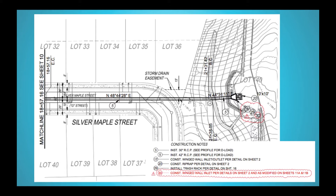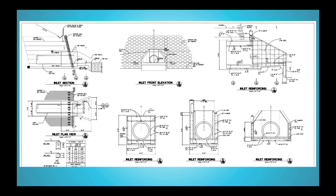Here is a snippet from one of our plans. You can see that number five is a 42-inch RCP and you can see the storm drain running right to the center of the street. This is where the tract kind of slopes down considerably, and the storm drain punches through that wall. Here is the outlet structure, which is number 17. In the construction notes it says construct winged wall inlet/outlet per detail on sheet two. If you go to that sheet, this is what it would show you — basically telling the subcontractor how to construct that wing wall for the outlet structure.